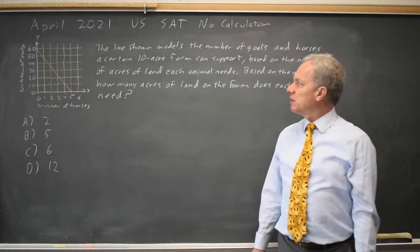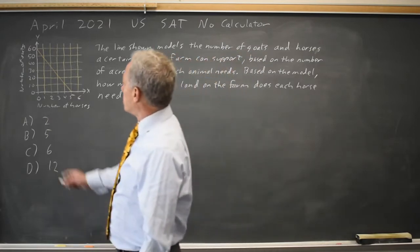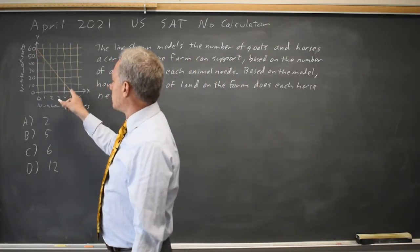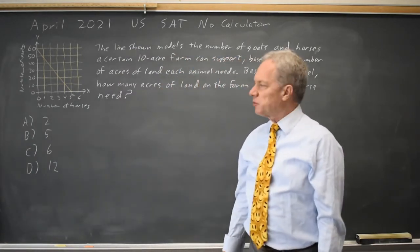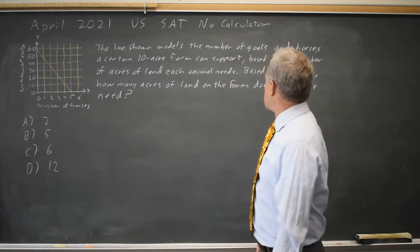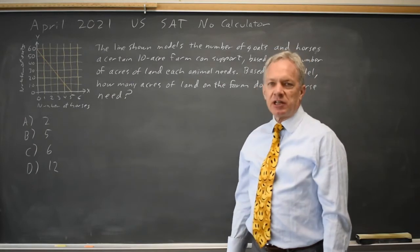The College Board is asking about goats and horses on a farm. This graph shows the number of goats and horses combined that this 10-acre farm will support, and the question is: how many acres of land does each horse need?